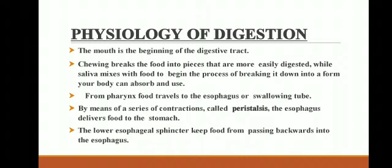Next, we will discuss the physiology of digestion — that is, how the digestion process occurs in our body. The mouth is the beginning of the digestive tract. Chewing breaks the food into pieces that are more easily digested, while saliva mixes with food to begin the process of breaking it down into a form your body can absorb and use. From the pharynx, food travels to the esophagus or swallowing tube. By means of a series of contractions called peristalsis, the esophagus delivers the food to your stomach. The lower esophageal sphincter keeps food from passing backward into the esophagus.